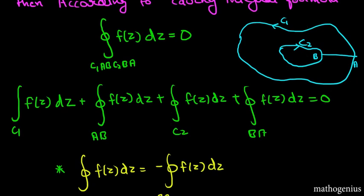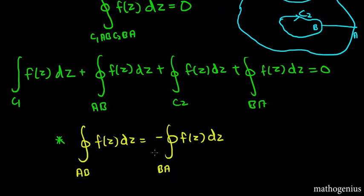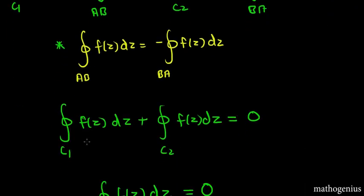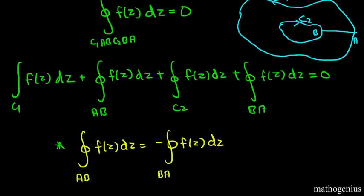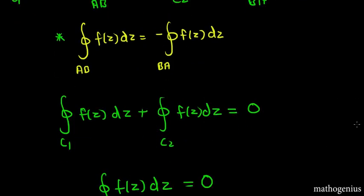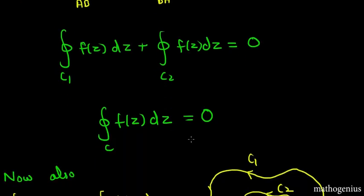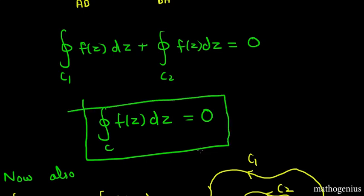Integration along A to B is equal to integration along B to A with a negative sign — they are opposite to each other, so they cancel. We are left with integration along C1 of f(z)dz plus integration along C2 of f(z)dz equals zero. This proves Cauchy's integral theorem for multiply connected regions — it is valid for multiply connected regions as well.